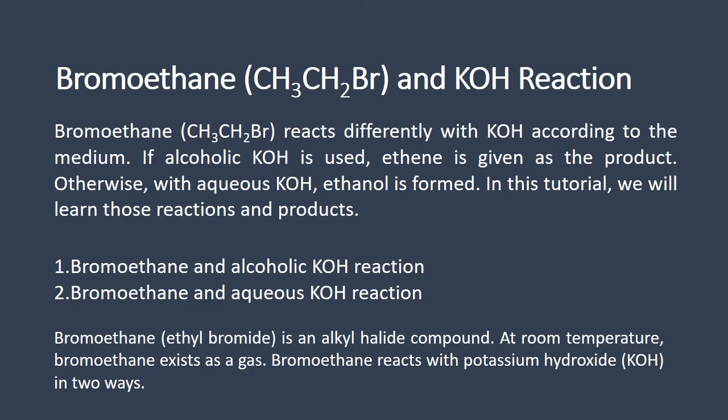Bromoethane reacts in two ways with potassium hydroxide according to the medium. If alcoholic potassium hydroxide is used, ethene is given as the product. Otherwise, with aqueous potassium hydroxide, ethanol is formed. In this tutorial, we will learn those reactions and products.